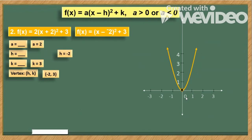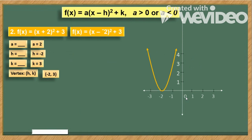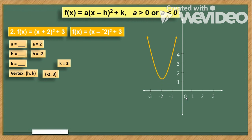Since h is negative 2, the parabola moves 2 units to the left of the y-axis. Since k is positive 3, the parabola moves 3 units above the x-axis.